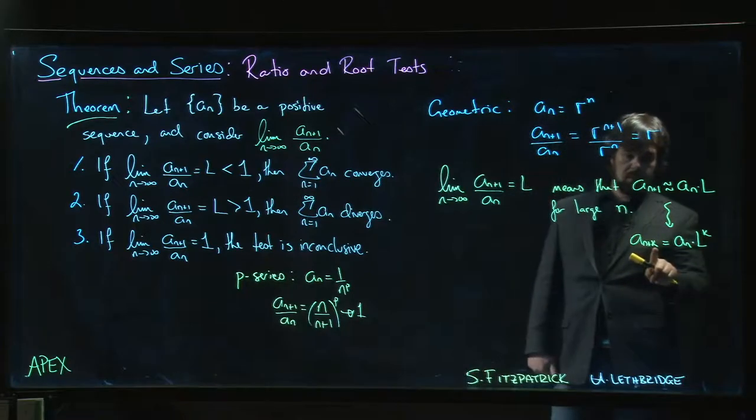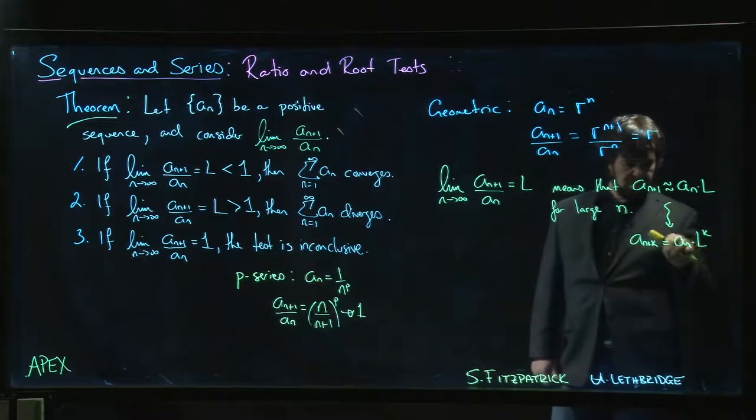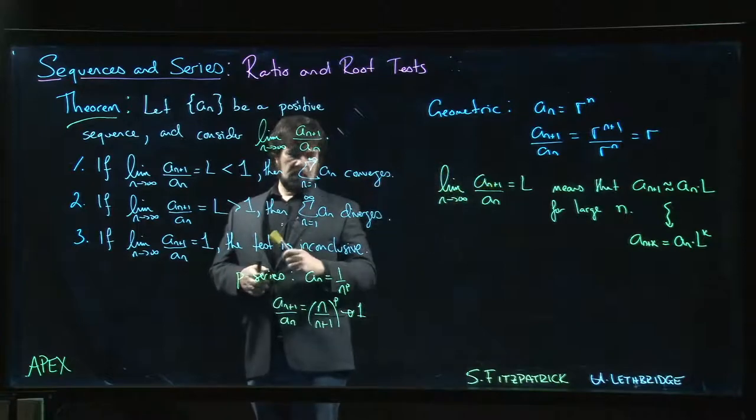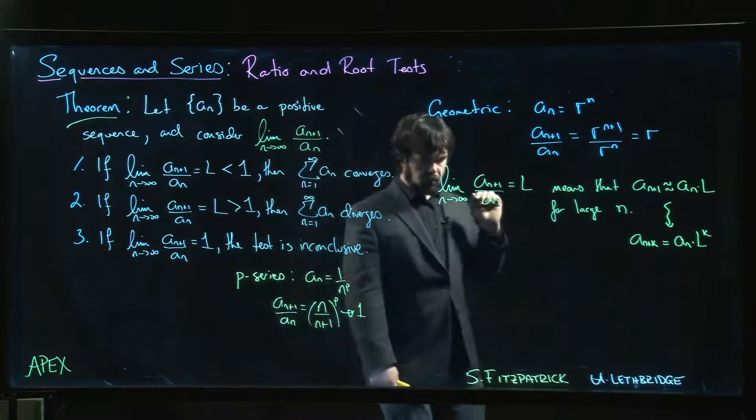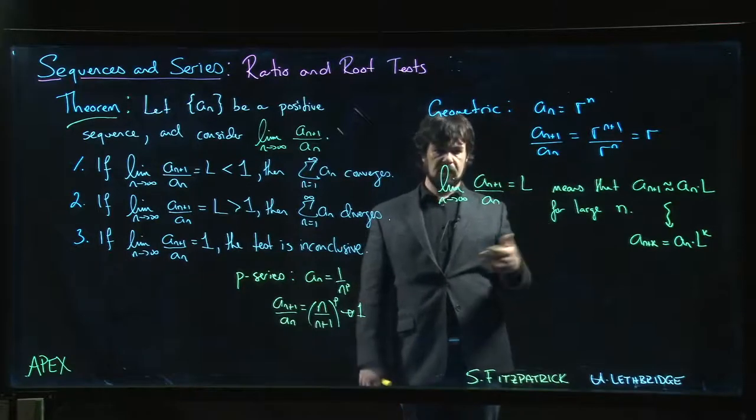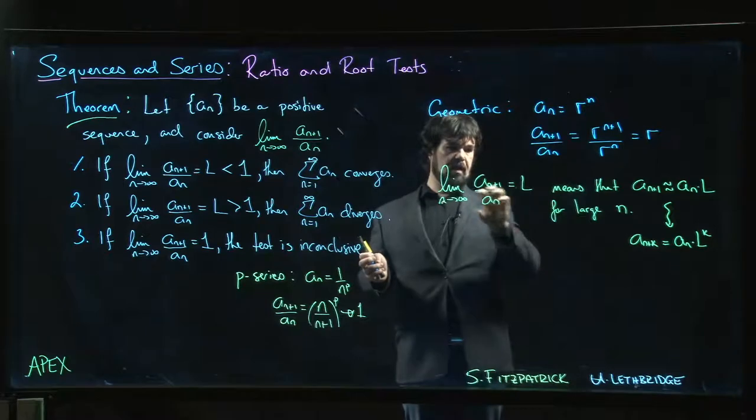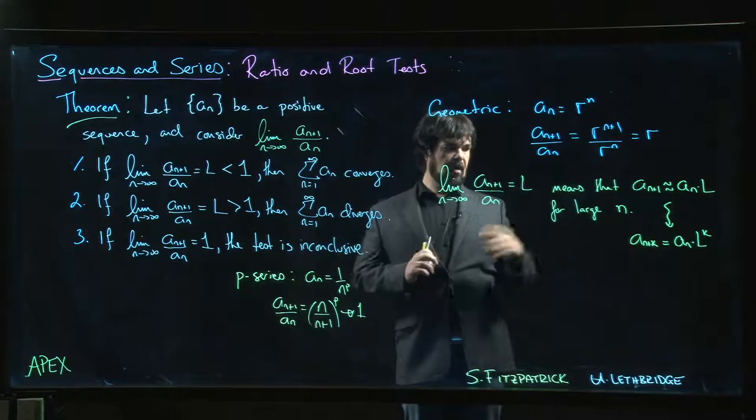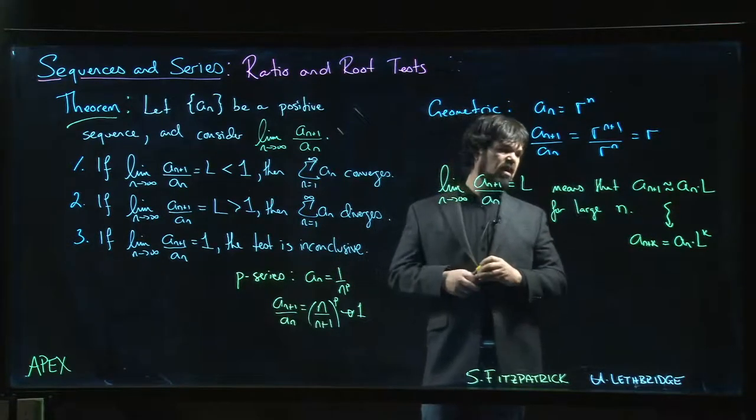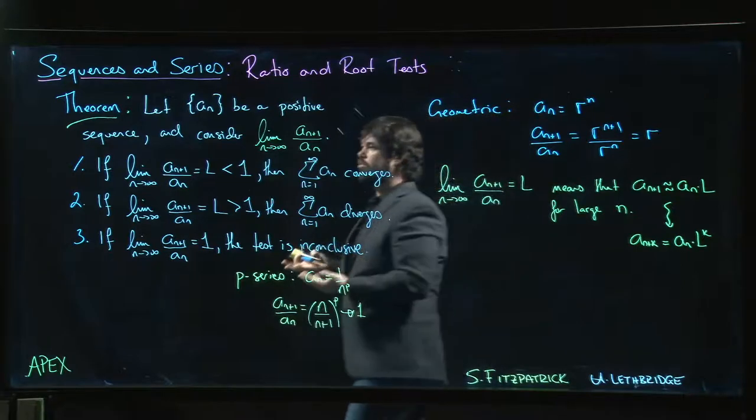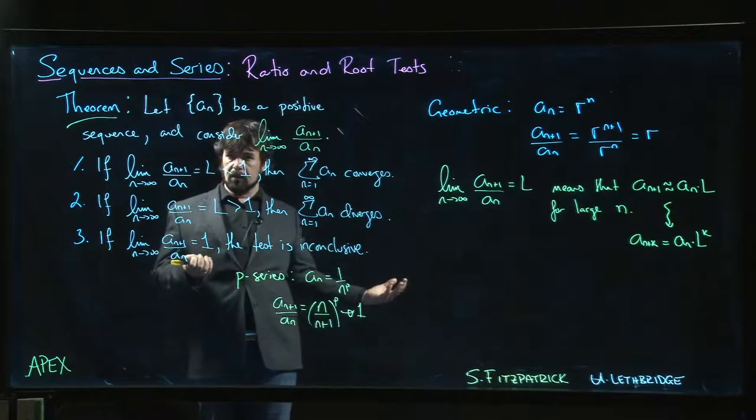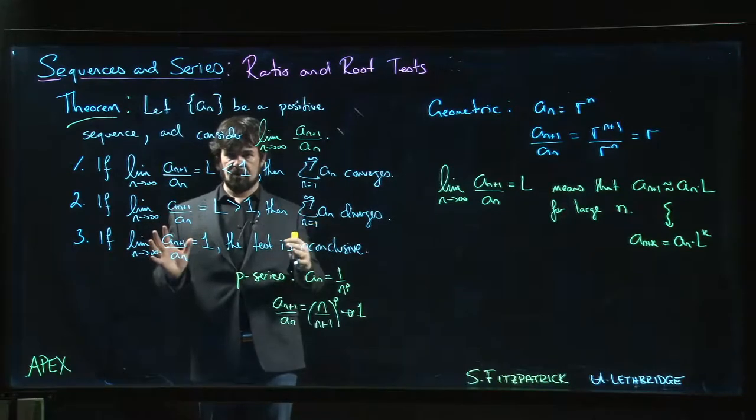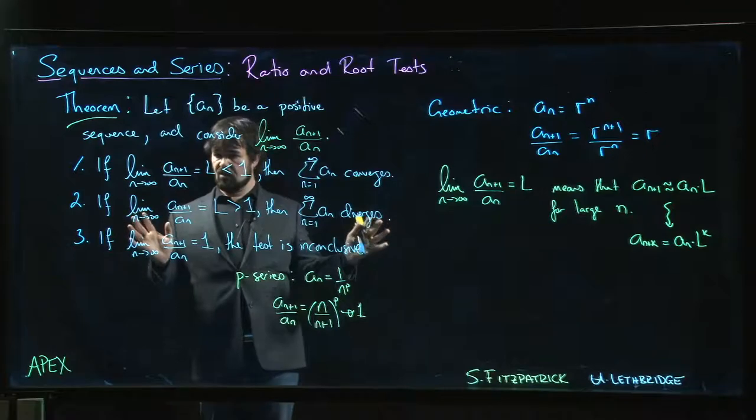And so then you sort of think about what happens as k gets really large, and you say, well, this is more or less behaving like a geometric series. It's not exactly a geometric series because this is only an approximation, it's not exact. But with the definition of the limit, if you bring in the epsilon definition of the limit, we can say for large enough n we can make the difference between this ratio and L less than epsilon. We can work out what that means and make this precise. So this is one way to think about why the ratio test works: it's essentially taking much more general series and in a sense comparing them to a geometric series, but using the machinery of a limit to set up that comparison.